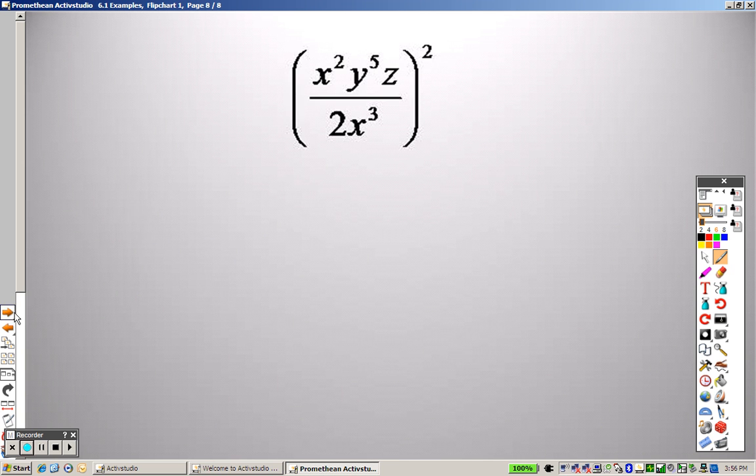Moving on to another example here. Take this through to everything, so that 2 needs to go through to the entire top. So that is x to the 4th. That is y to the 10th. Z is like saying z to the 1st, so that's z squared.